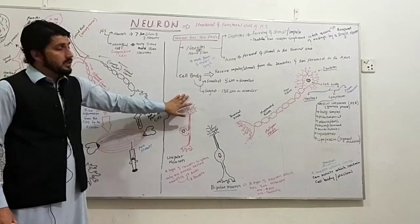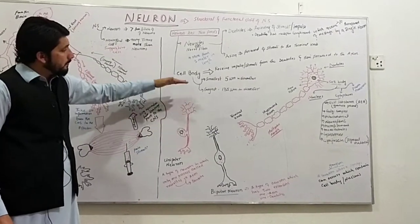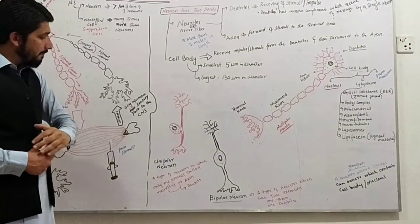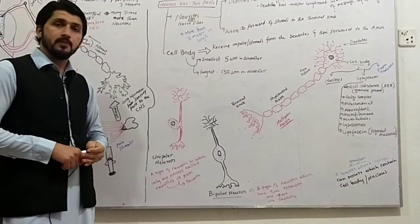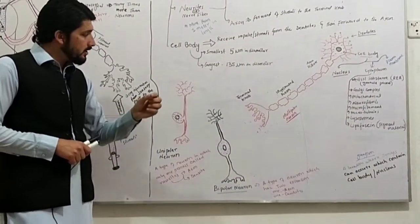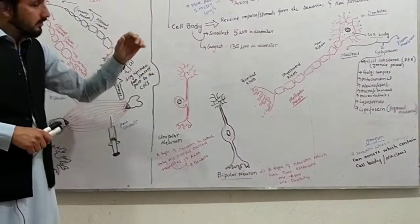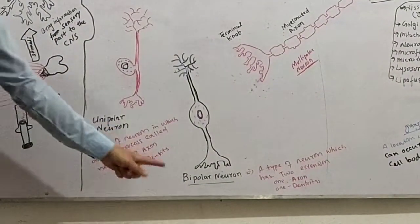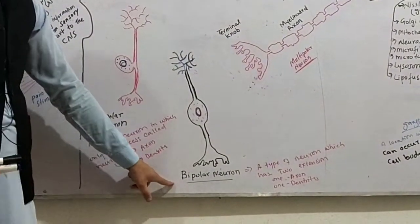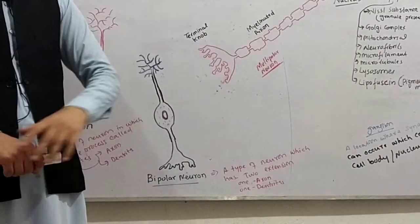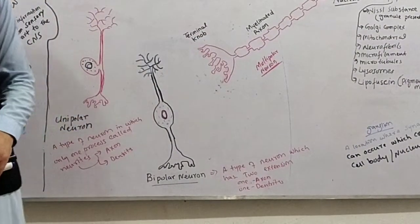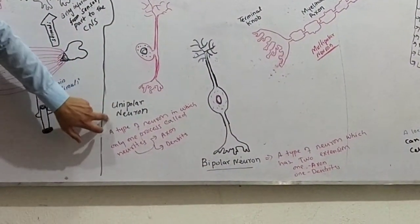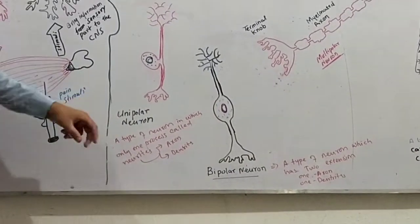Neurons are further classified on the basis of polarity into three types: unipolar neuron, bipolar neuron, and multipolar neuron.